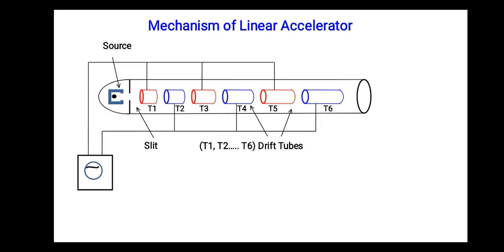There are drift tubes T1, T2, T3, T4, T5, and T6. They are arranged in the order of increasing length, that means the length of cylinder T2 is greater than the length of cylinder T1. Similarly, the length of T3 is greater than the length of cylinder T2 and so on.